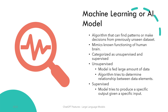In supervised learning, the model is trained to produce a specific output given a specific input. An example can be a spider trying to identify the type of insect that landed on the outer periphery of its web, by iteratively adjusting tension on its web strings — just like you adjust your guitar strings — until it gets the correct signal for the type of insect.